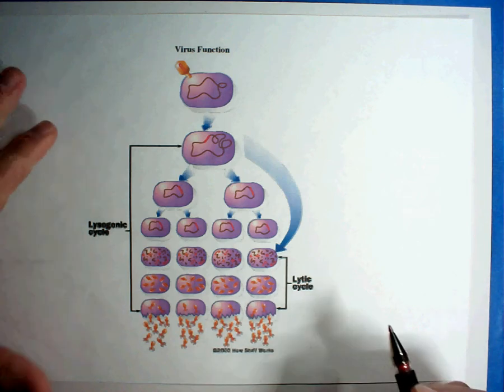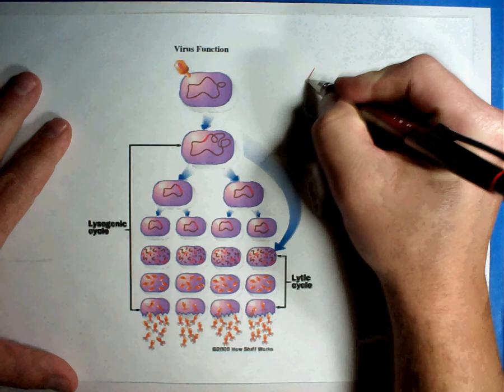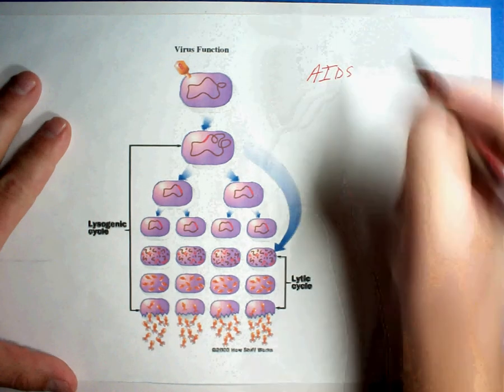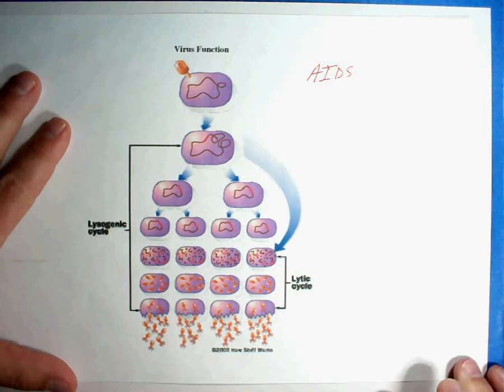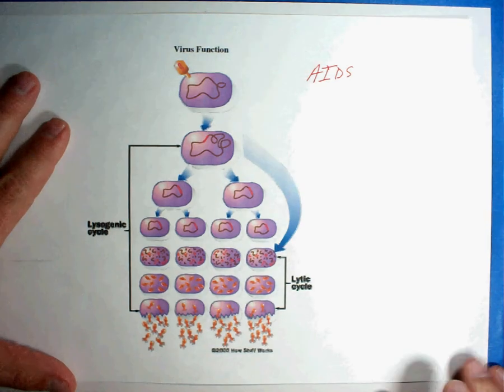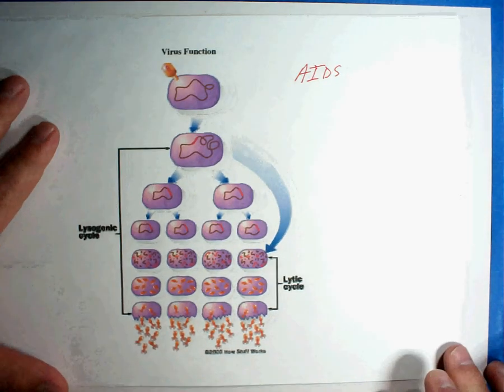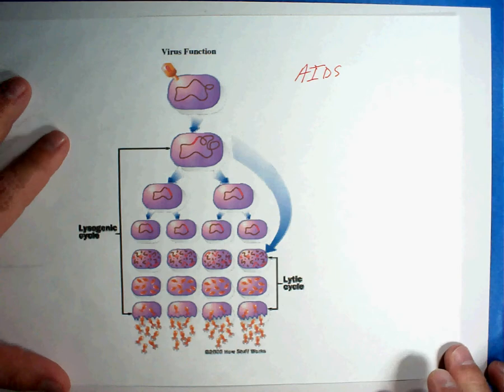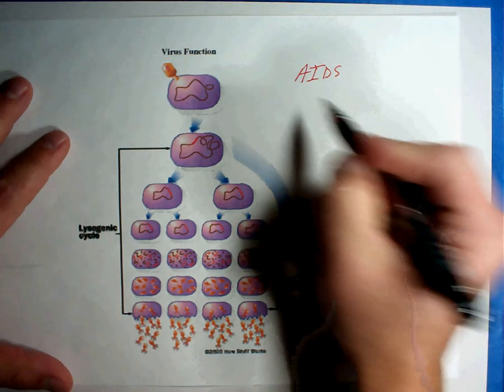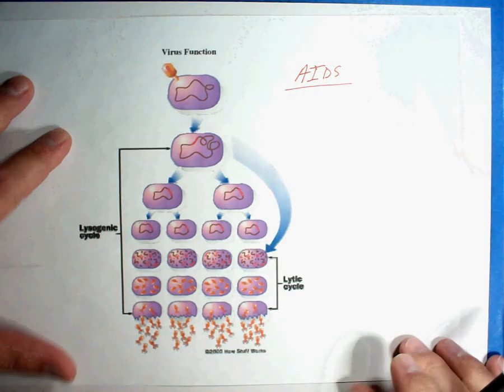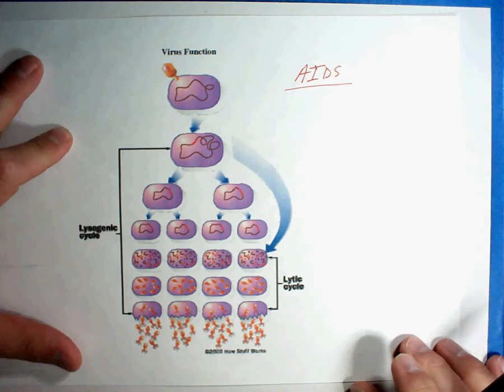The very first one that I want to talk about is the AIDS virus. The reason the AIDS virus is asked a whole lot about on the TAKS test typically is because it is a global problem. It is a problem that the world is trying to deal with. Millions and millions of people are contracting the AIDS virus. So a little bit of background for you.